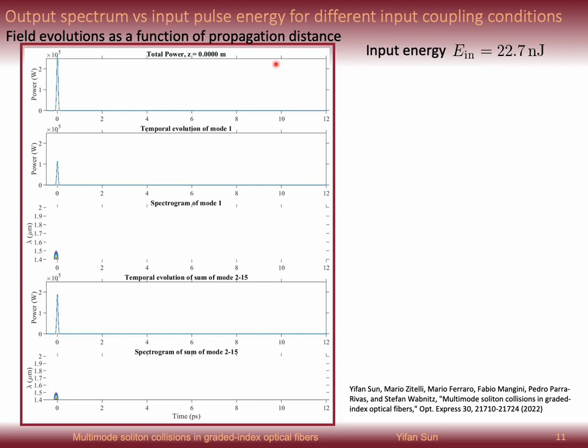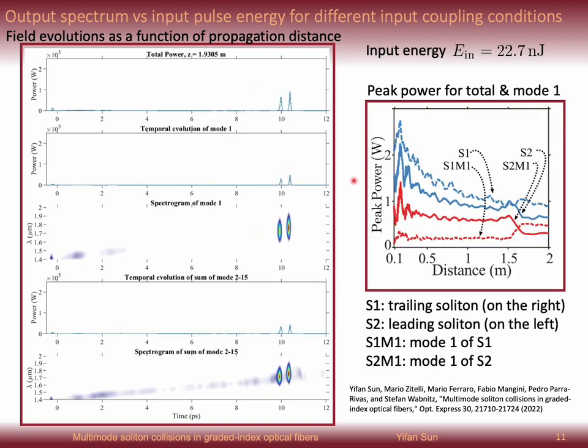Here I show you an example of the field evolution of soliton as a function of the propagation distance when input energy is 22.7 nanojoules. We see the soliton splits into two solitons in the beginning of the fiber. At this time, we see the power of the trailing soliton, which is on the right here, is larger than the power of the leading soliton. At this moment, we would expect the trailing soliton experiences larger nonlinearity due to its high power, so that it will exhibit larger group delay, then the two solitons will separate more, so the collision may never occur. However, the evidence is that they will collide. Because the power of the fundamental mode in the leading soliton is larger than the trailing soliton, you can see here, so that the group velocity of the leading soliton gradually is smaller than the trailing one, then they collide at 1.7 meters. After the collision, the trailing soliton gains more energy from the leading one, including the total energy and the energy of mode 1. This leads to the further separation of two solitons.